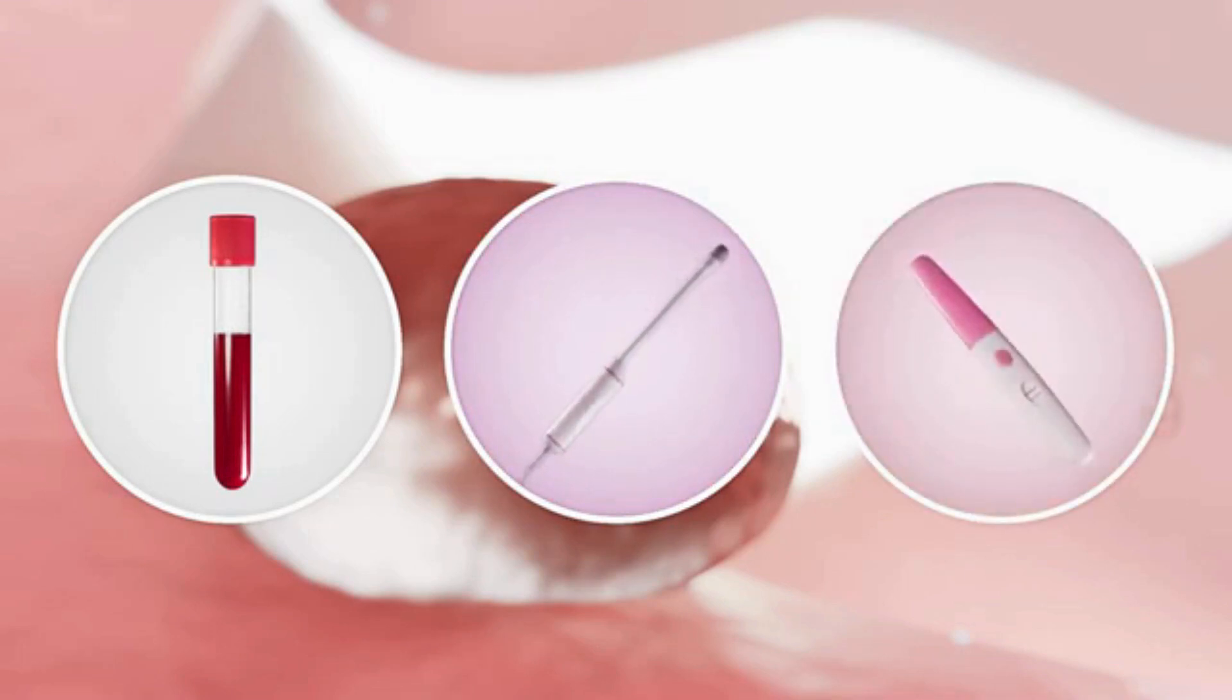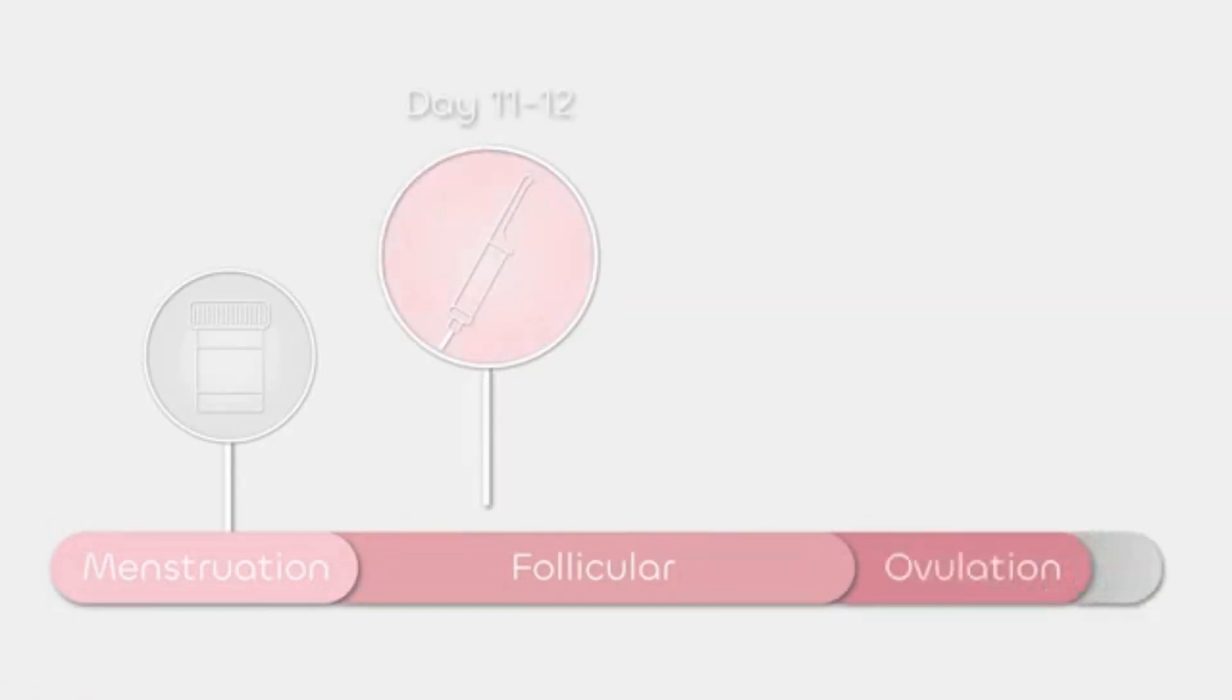At home, ovulation sticks may also be used for monitoring this process. Typically, the first monitoring appointment is around day 11 to 12 of the cycle, and patients usually require 2 to 3 appointments prior to the IUI procedure.